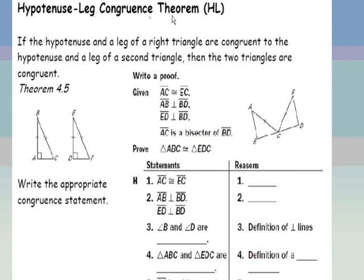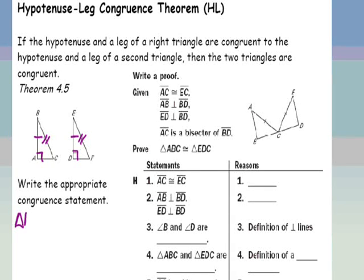Moving on to the hypotenuse-leg congruence theorem. If the hypotenuse and leg of a right triangle are congruent to the hypotenuse and leg of a second triangle, then the two triangles are congruent. You must first show that you are dealing with right triangles. I have a leg of one congruent to the leg of the other, and the hypotenuse of one congruent to the hypotenuse of the other — so triangle ABC is congruent to triangle DEF, and my reason would be HL congruence.